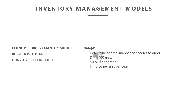We saw an example with a clinic stocking needles: annual demand D = 1,000 units, ordering cost S = $10 per order, and holding cost H = $0.50 per unit per year. Using the formula Q* = √(2DS/H), we found the optimal order quantity to be 200 units.